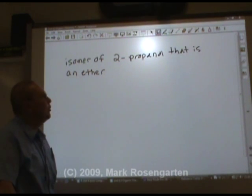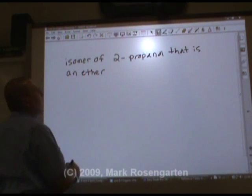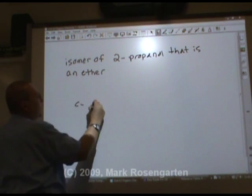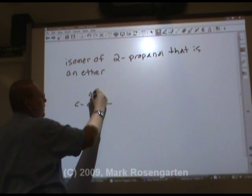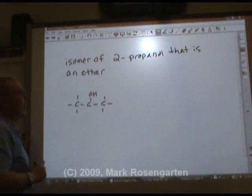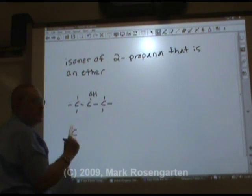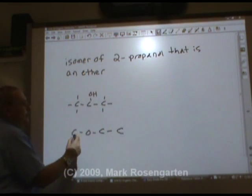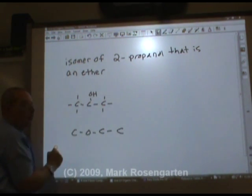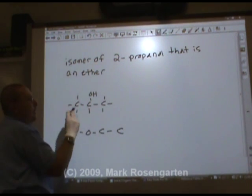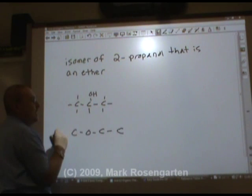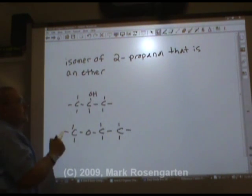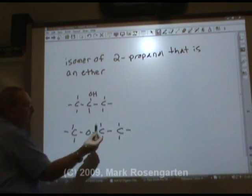So if we want an isomer of 2-propanol that's an ether, here's how we do it. Propane has 3 carbons. 2-propanol means the OH is on the second carbon. Our ether would also have to have 3 carbons, but ethers have that oxygen in between. We count 8 hydrogens on each — so the isomer of 2-propanol that's an ether is methyl ethyl ether.